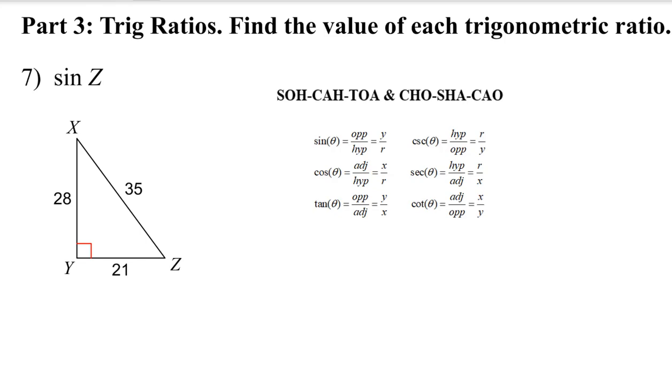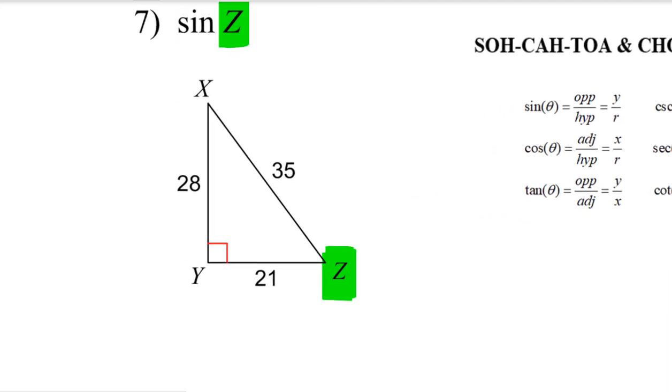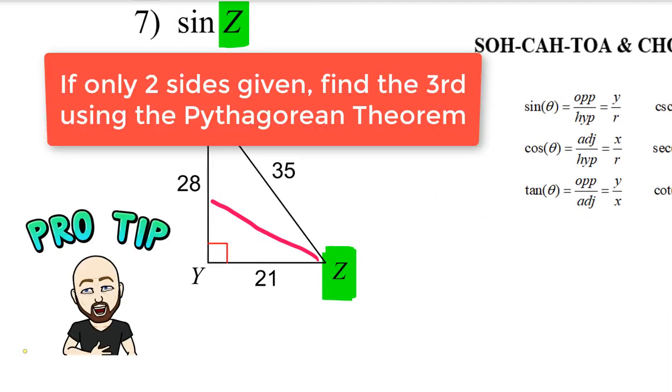Now, when you go to find trig ratios, you always wanna pay attention to the location of the angle that you're given. So in this case, we're given angle Z, and angle Z is located down here. So the very first thing that we wanna do is, from angle Z, we wanna identify three key parts of our triangle. So from angle Z, the side, if I go all the way over here, that is gonna be the opposite side.